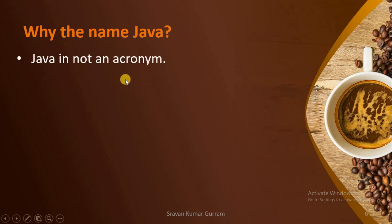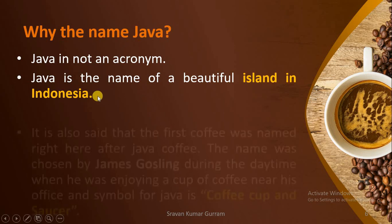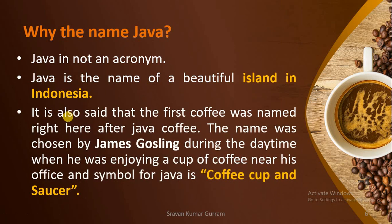Why did James Gosling give the name Java to this programming language? First, Java is not an acronym — there is no full form for Java. Java is the name of a beautiful island in Indonesia, and it is a place name. This place is famous for the coffee brand called Java Coffee. While James Gosling and his team were developing this project, they frequently wanted to take coffee, so they decided to give the place name Java to their programming language.